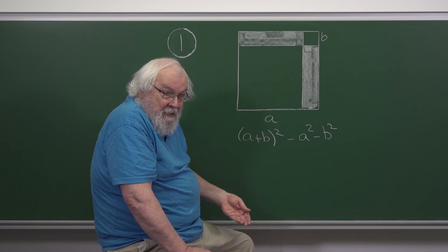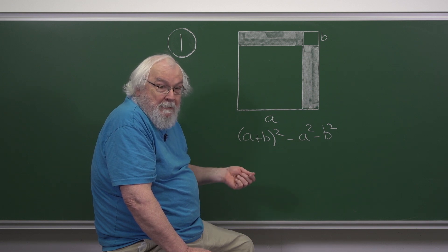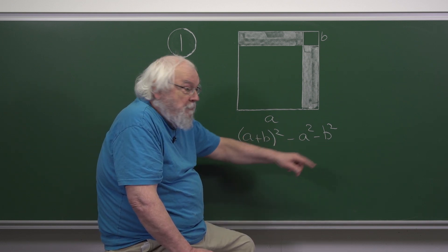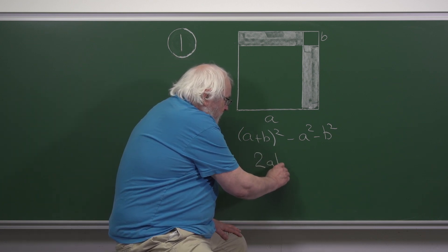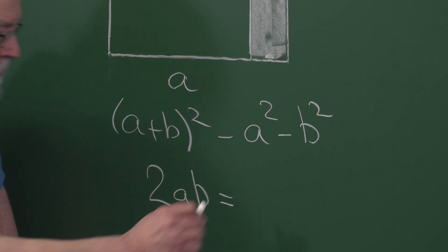A plus B times A plus B is A squared plus 2AB plus B squared. Then you subtract off A squared and B squared. So the formula for the shaded area is 2AB and it's 286.